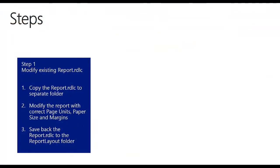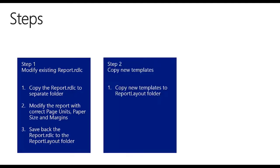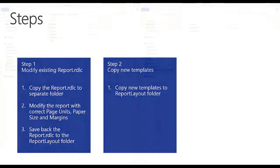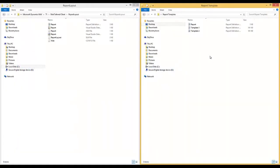So we have now completed step number one. We have modified the existing report IDLC — we copied it, modified it, and saved it back into the Report Layout folder. For step number two, we want to use existing templates that I have created and copy them to the Report Layout folder so we can reuse the controls. You may notice I had two files in there: Template One and Template Two — these are the template reports I use heavily when creating reports.